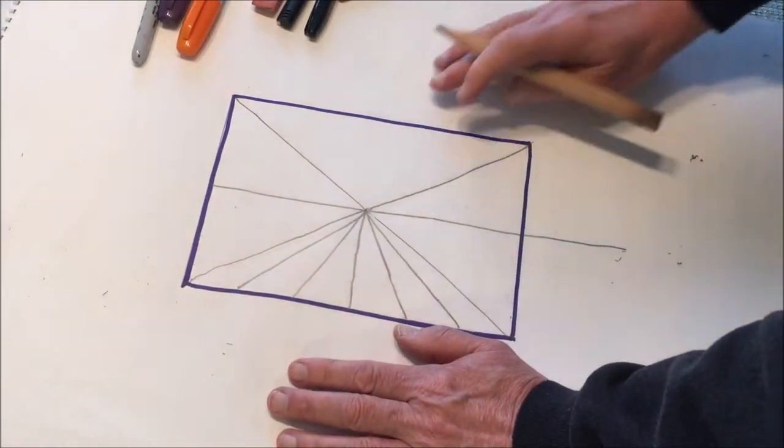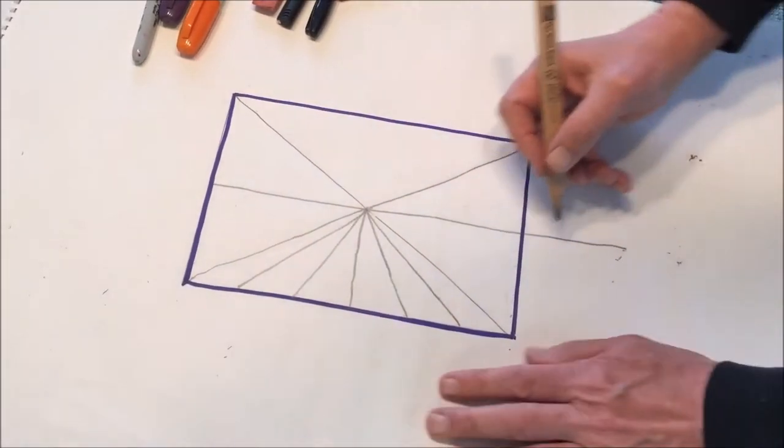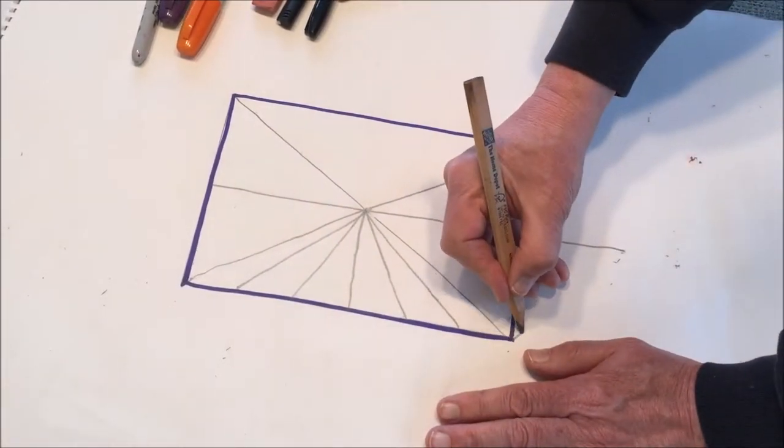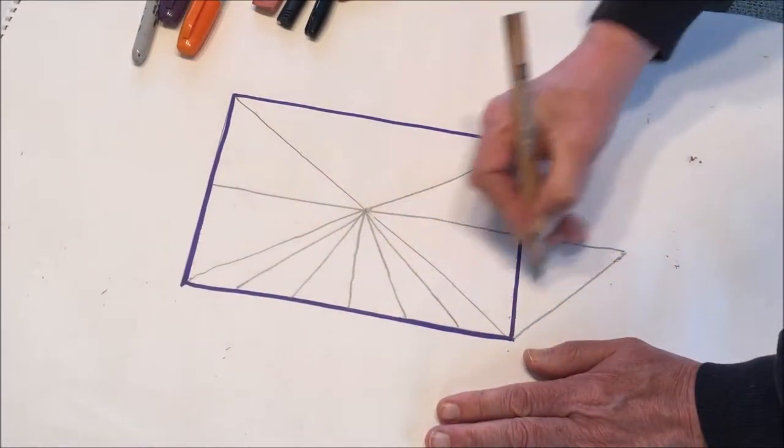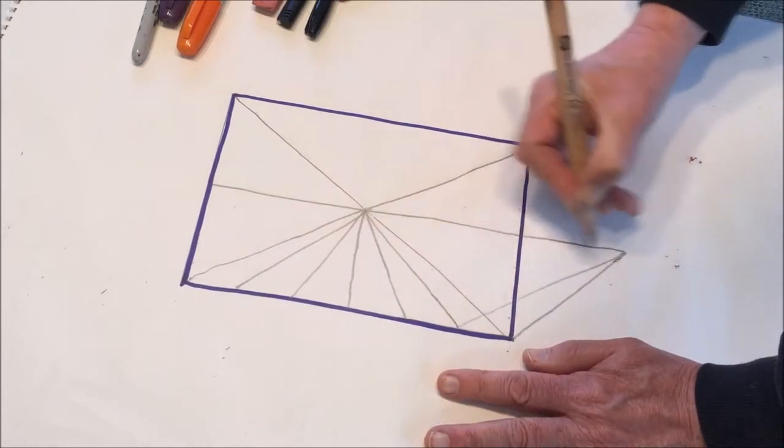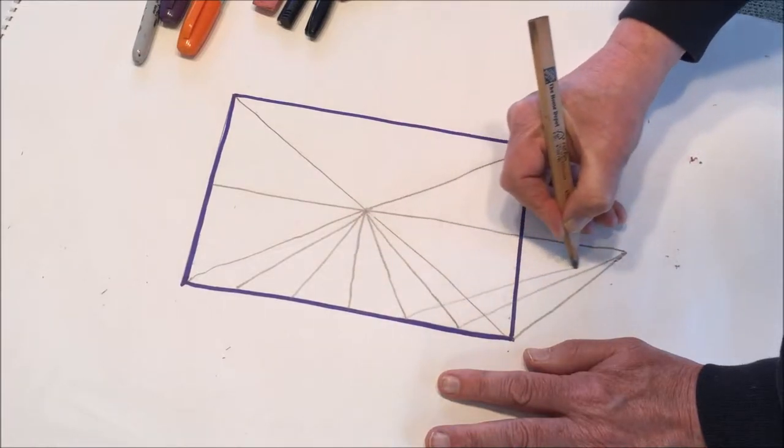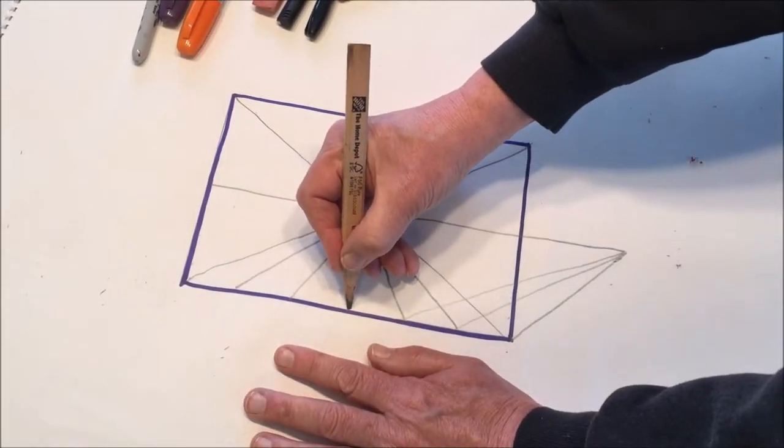Even artists like Cimabue and Giotto understood some of the basics of perspective because they knew that drawing diagonal lines to the center would produce an illusion of three-dimensional space.